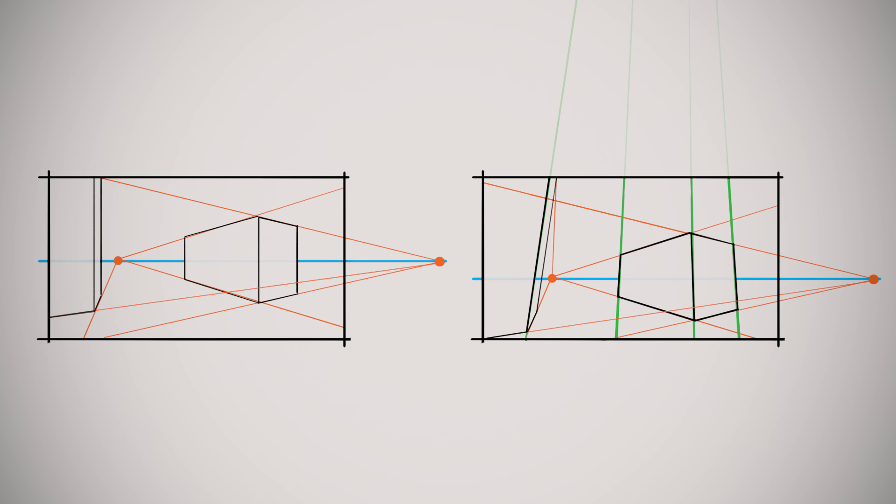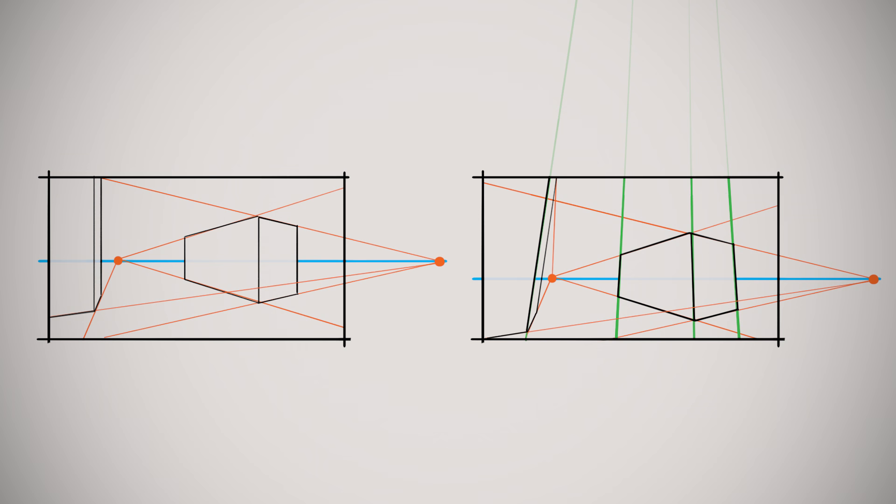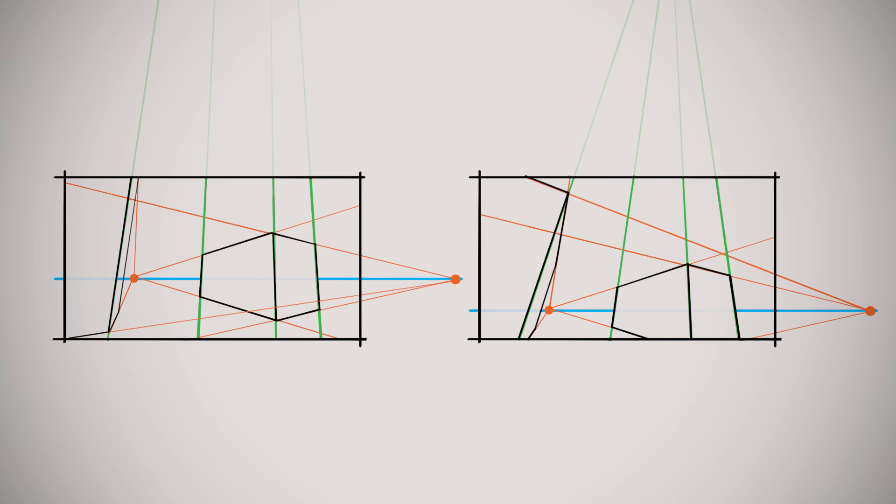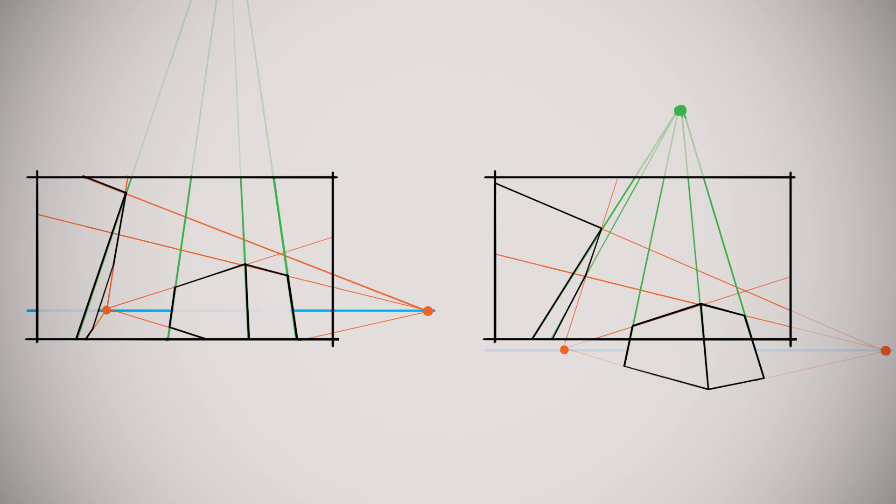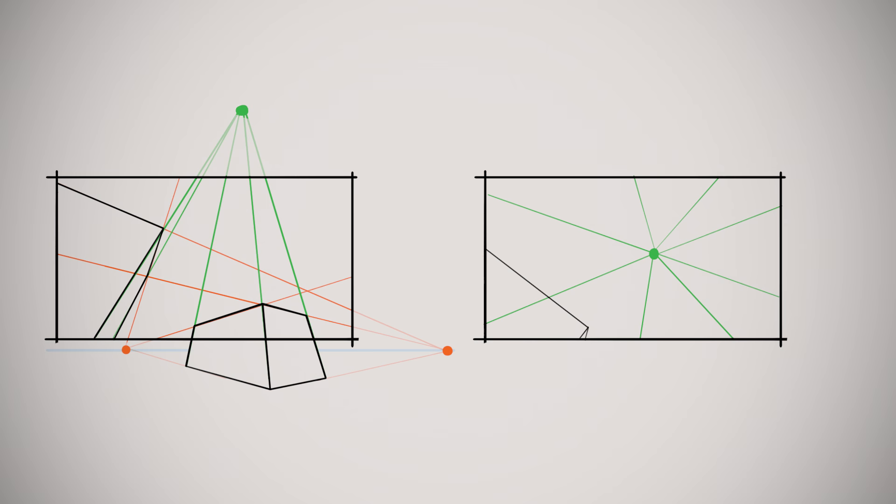Looking up or down even slightly will cause vertical recession of depth to some degree. The farther you look, the closer the third vanishing point gets to the picture plane, and thus creates steeper recession of depth. And yes, if you look up or down far enough so that the third vanishing point reaches the center of your picture plane, the scene reverts all the way back to one-point perspective again.